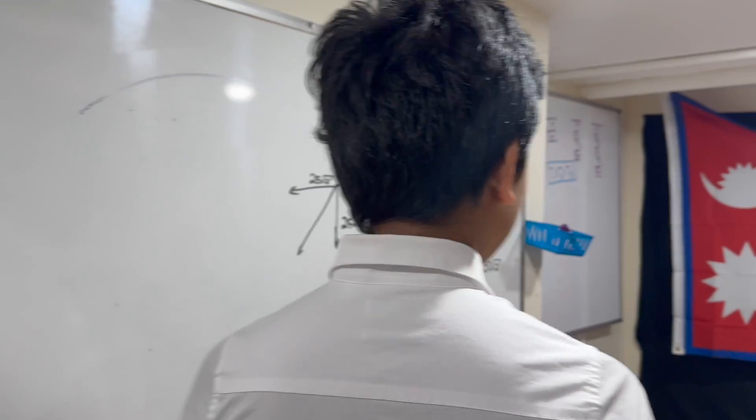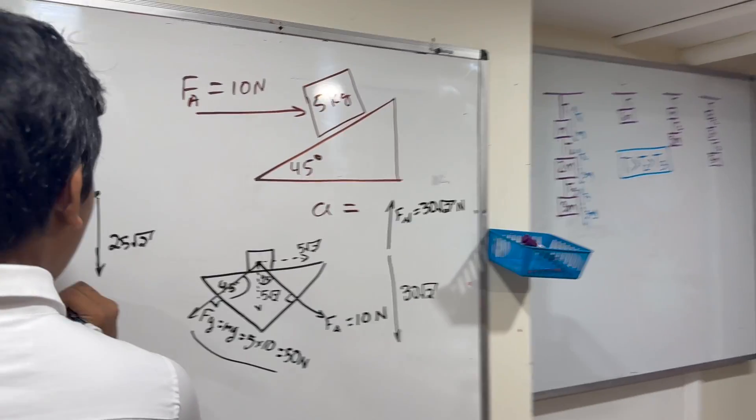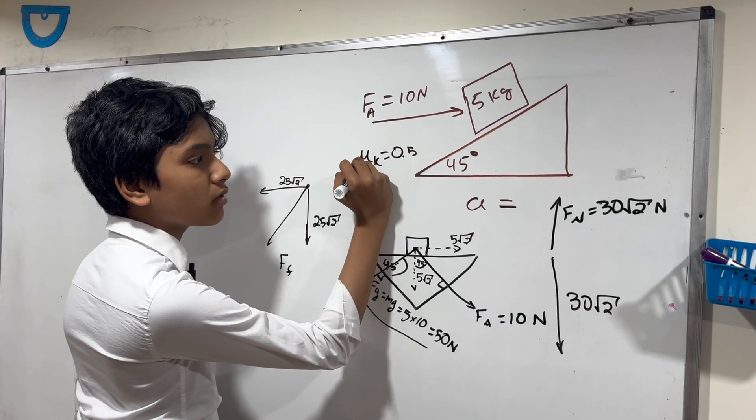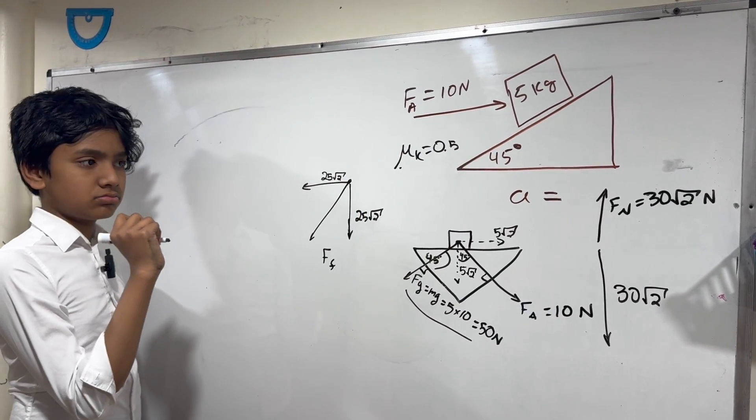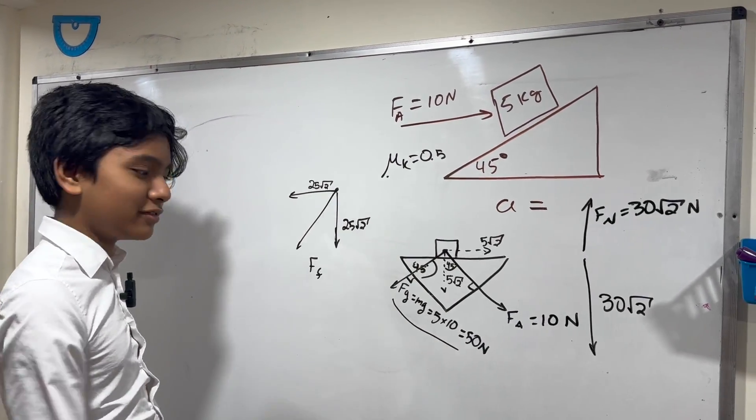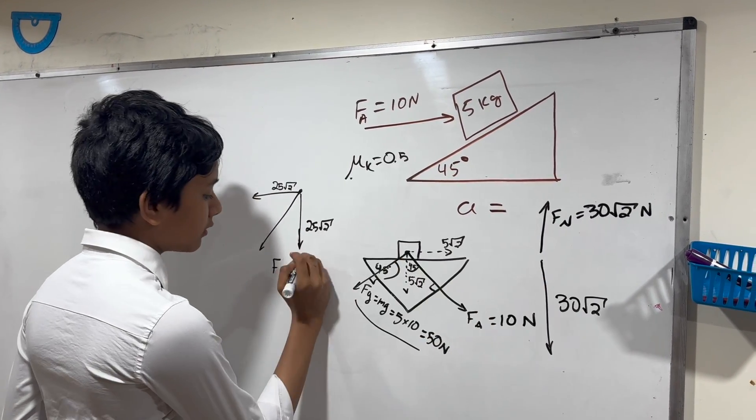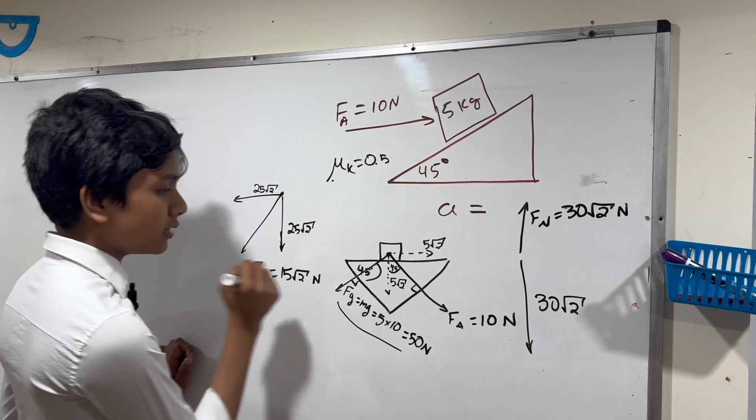FN is going to have to compensate for that by also being 30 root 2. That's pretty big. That means that FF—you forgot to mention that mu K equals 0.5 by the way. I did forget. So FF is 0.5 times 30 root 2, so it's 15 root 2 newtons.